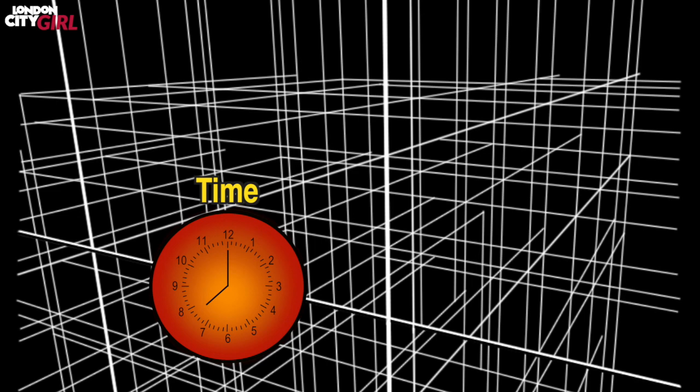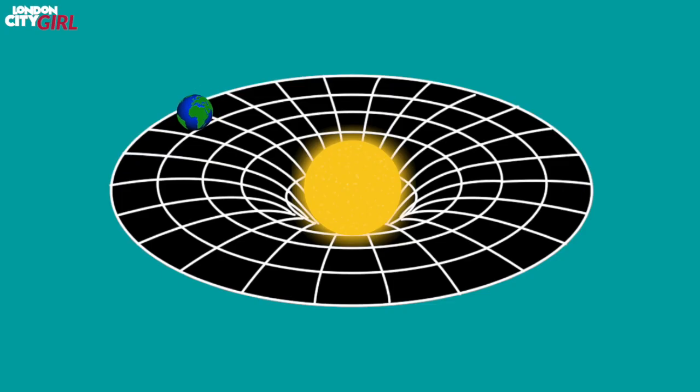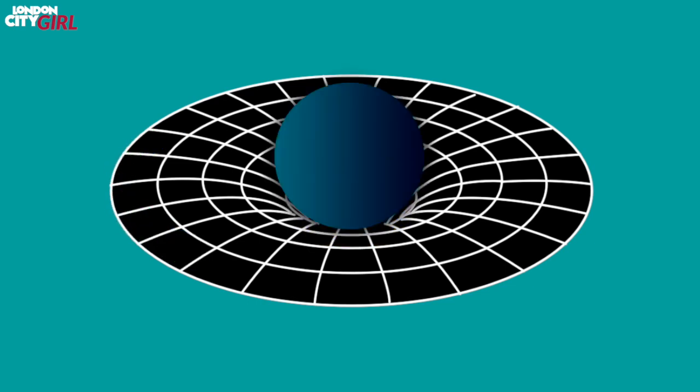Einstein thought of space-time as malleable. Mass and energy can warp space-time and this gives rise to the phenomena of gravity. Dark matter does have mass and therefore does produce gravity.